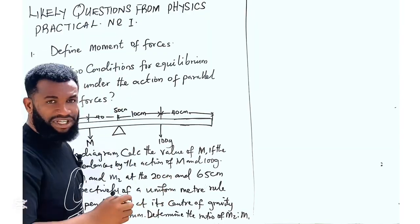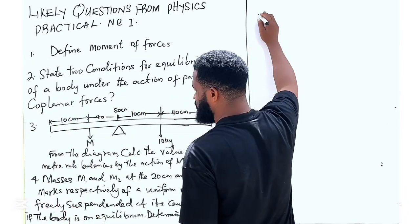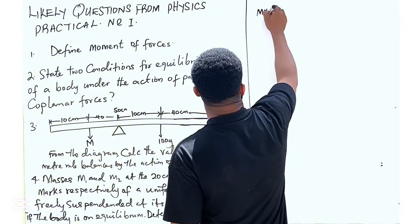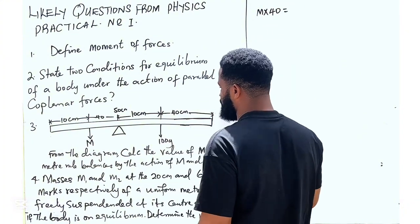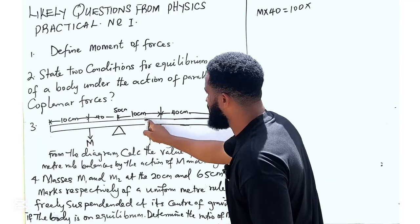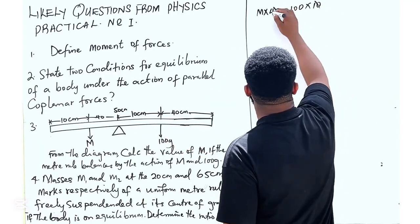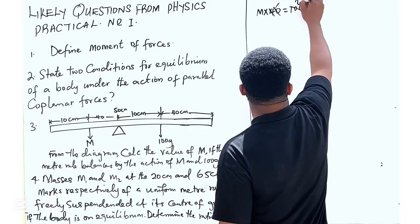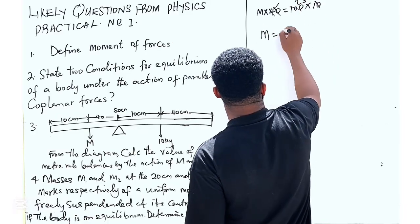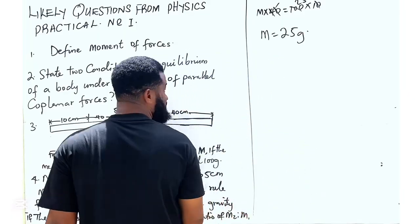Now the mass moment, clockwise moment is going to be mass times 40. So I'm going to have m times 40, which is equal to 100 times, from here to here is 10. So this cancels this. This is 25. Therefore mass is given as 25 grams. So the mass is 25 grams.